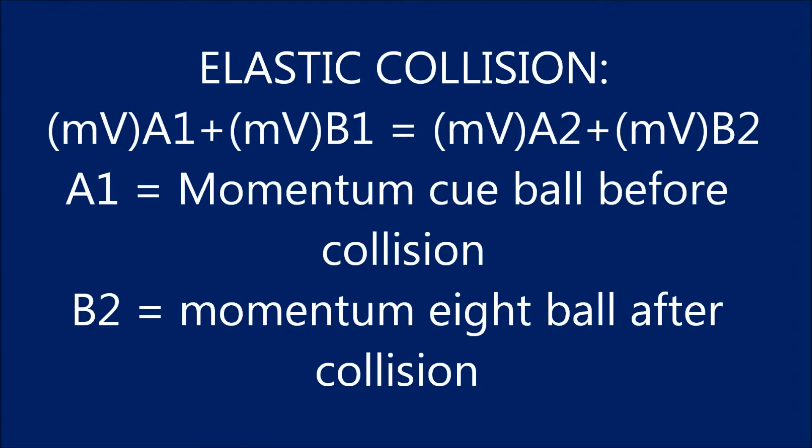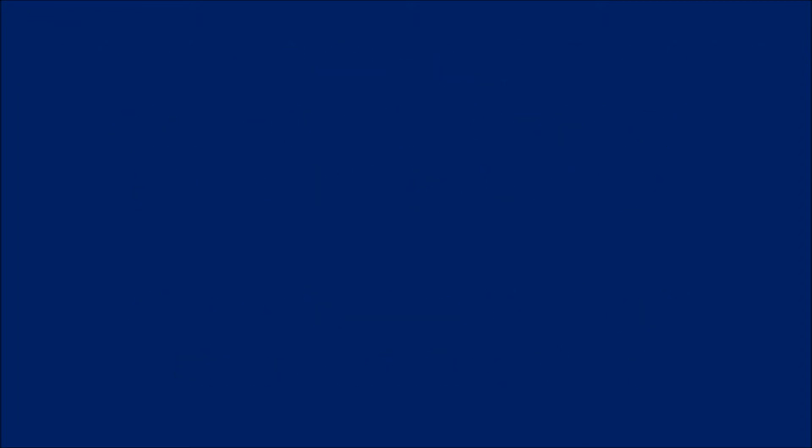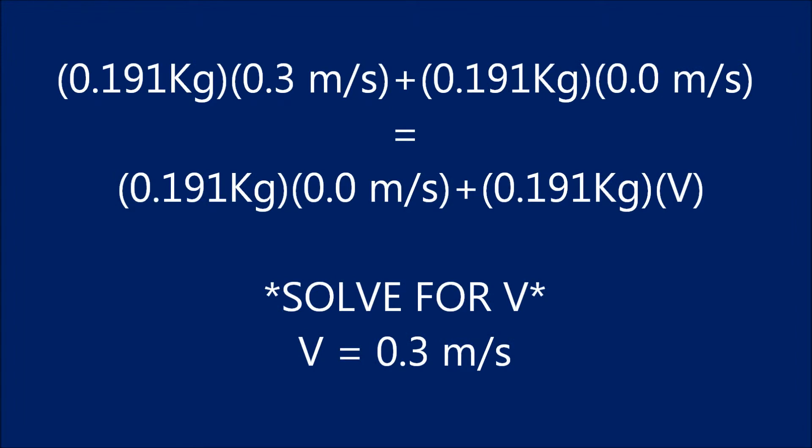Knowing that the total momentum after is equal to the total momentum before, we can then use the elastic collisions formula to solve for the velocity of the eight ball. This formula is MvA1 plus MvB1 is equal to MvA2 plus MvB2, where B2 is the momentum of the eight ball after the collision and A1 is the momentum of the cue ball before the collision. Once plugging in all the information we know, and then ignoring all the friction that is on the pool table, we can then rearrange the formula and solve for V on the eight ball. The outcome would be 0.3 meters per second. This is because no momentum is lost during an elastic collision.